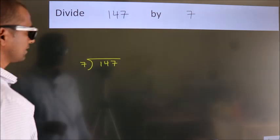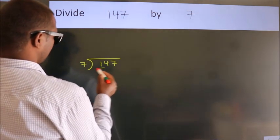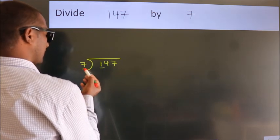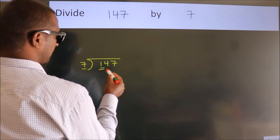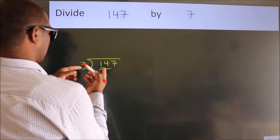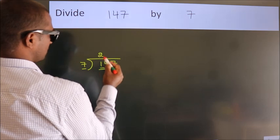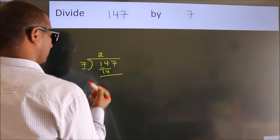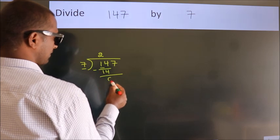Next. Here we have 1, here 7. 1 is smaller than 7, so we should take 2 numbers, 14. When do we get 14? In 7 table, 7 2s, 14. Now we should subtract, we get 0.